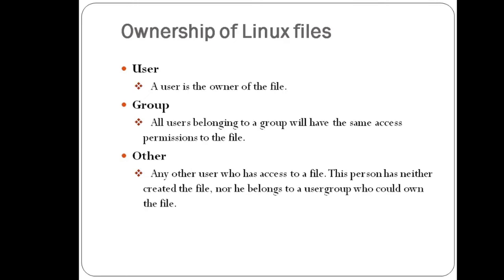There are two things: ownership and permission. There are three types of ownership of a Linux file. One is the user — that is the person who creates the file, and they are the owner of the file. Another is the group. All users belonging to a group will have the same access permissions to the file. For example, in a project where many people need to access one file, instead of giving permission to all the people individually, you can put all the people in one group and give permission to access a particular file.